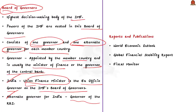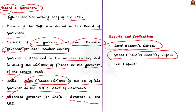Based on past prelims question papers, IMF reports have been consistently asked. IMF publishes many international and regional reports. The three most important ones are: World Economic Outlook (WEO), Global Financial Stability Report (GFSR), and Fiscal Monitor (FM). These are the three important reports published by IMF relevant for prelims preparation.